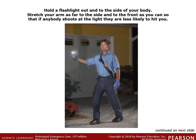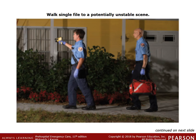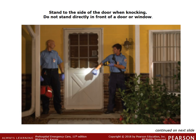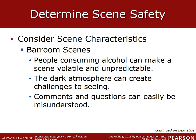Using a flashlight — hold it beside you, not in front of you, so you don't make yourself a target. The person in front holds the flashlight; the person in the back holds the bag. This allows the person in front to handle situations first. Walk single file with a partner. When approaching a door, stand to the side — most people stand directly in front of the door, but someone who wants to do harm will shoot through it. Also note that your eyes can require several minutes to adjust from bright to low light, so wait and allow them to adjust.